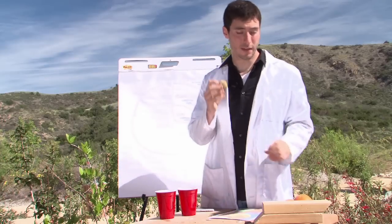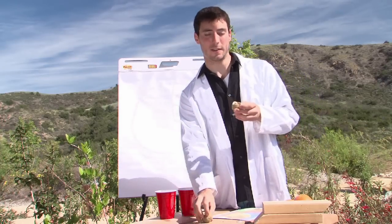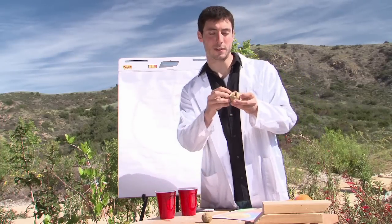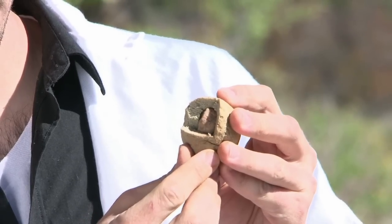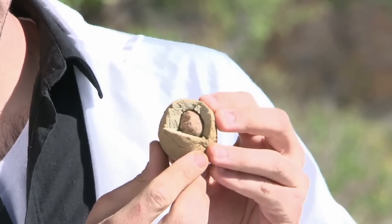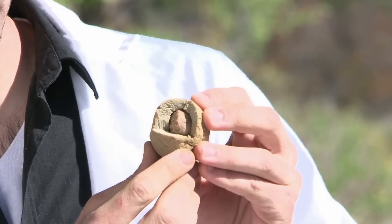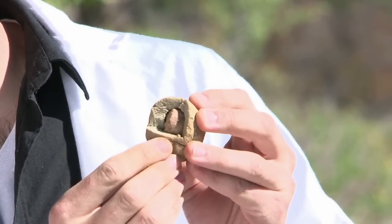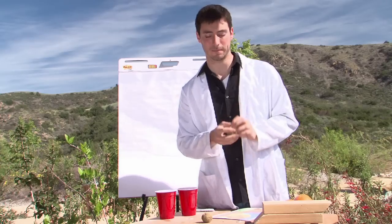After you've done that, take a knife and cut a cross section out so you can actually see the core, the layers of the mantle, and then the tiny little layer on top of the soil representing the earth's crust.